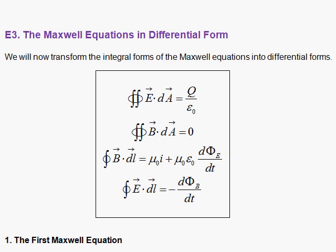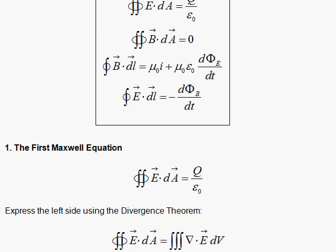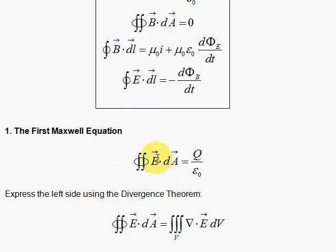We start with the first one, Gauss's Law, and the divergence theorem says that we can replace the surface integration that encloses a volume with an integration over that volume, where the integrand is del dot E vector.